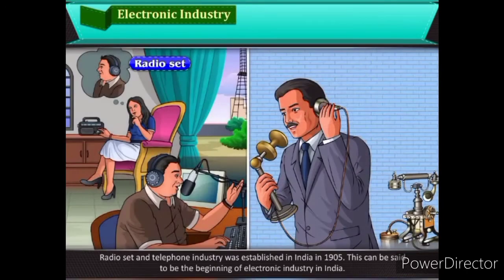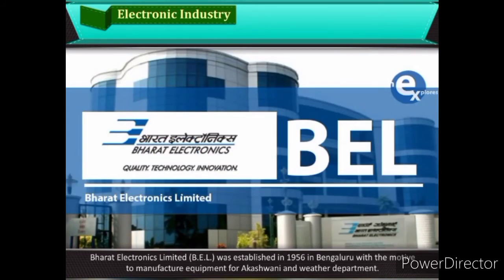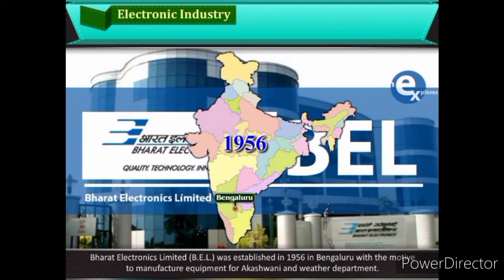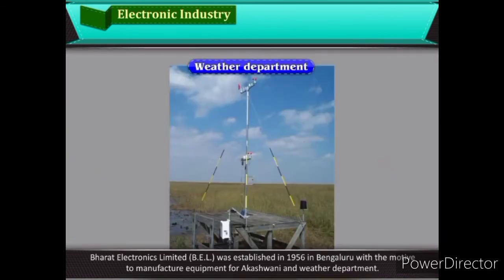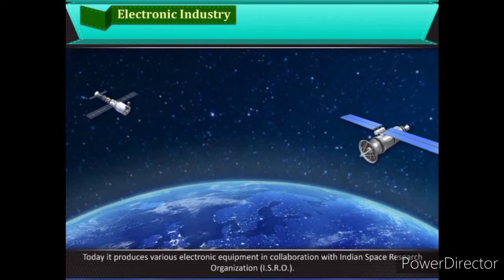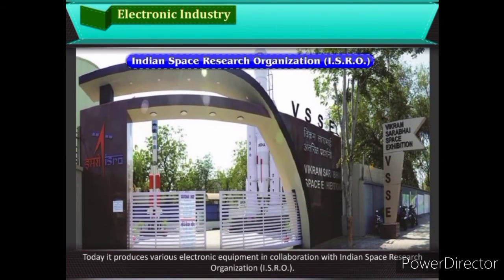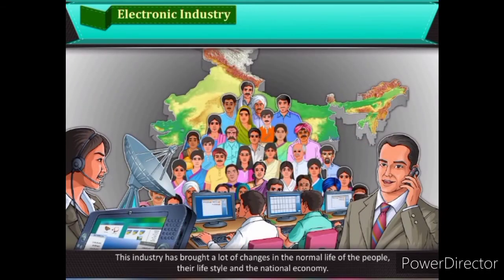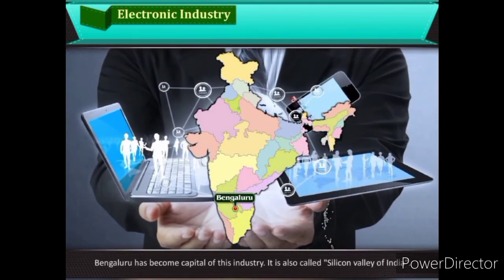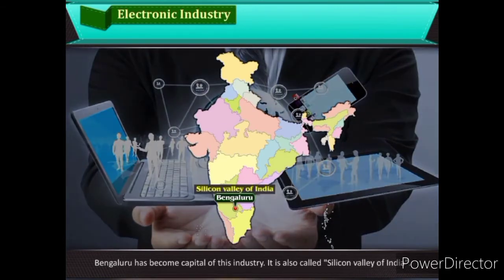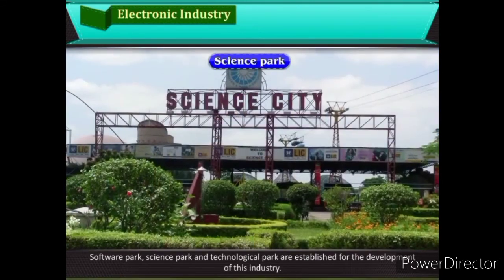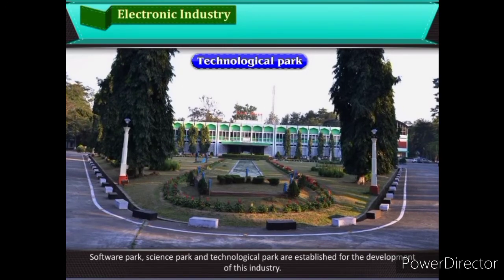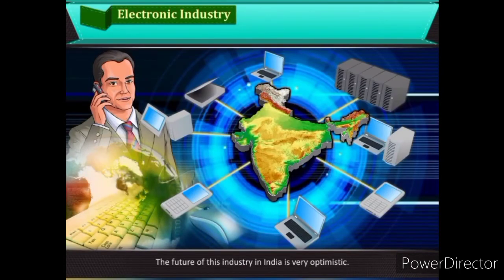Electronic Industry: Radio set and telephone industry was established in India in 1905, which can be said to be the beginning of electronic industry in India. Bharat Electronics Limited, BEL, was established in 1956 in Bengaluru to manufacture equipment for Akashwani and the Weather Department. Today, it produces various electronic equipment in collaboration with ISRO. This industry has brought a lot of changes in the normal life of people, their lifestyle, and the national economy. Bengaluru has become the capital of this industry and is also called the Silicon Valley of India. Software Parks, Science Parks, and Technological Parks are established for the development of this industry, and the future of this industry in India is very optimistic.